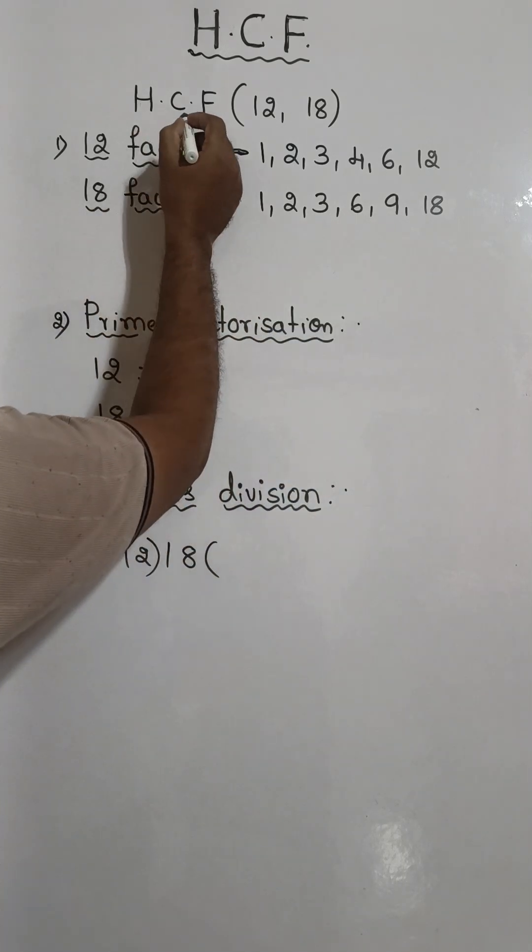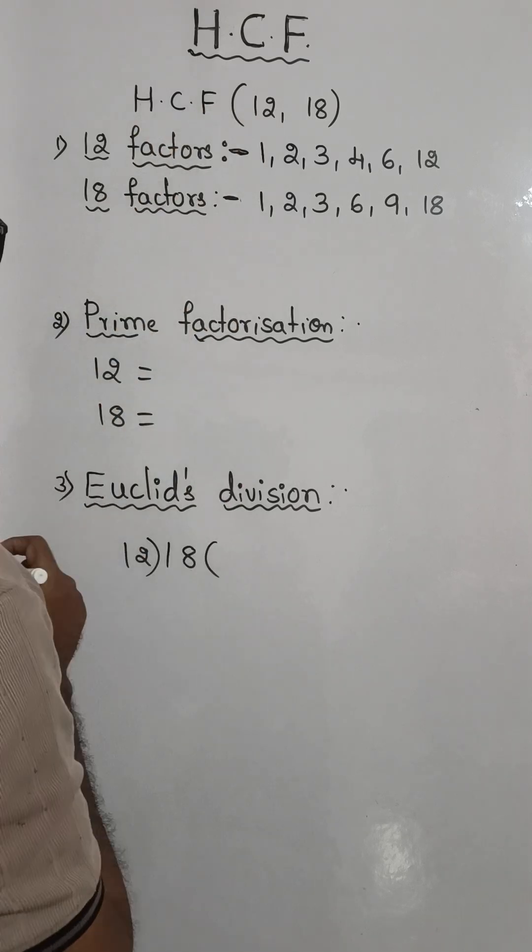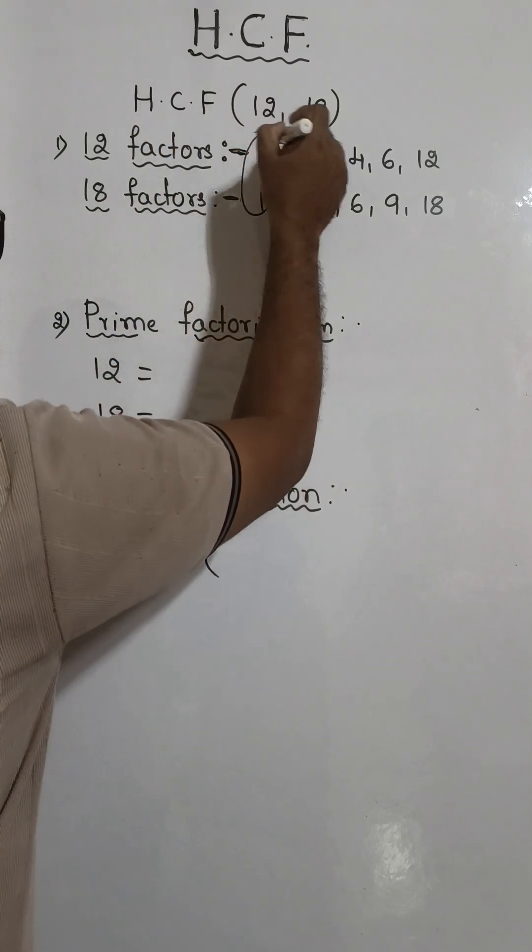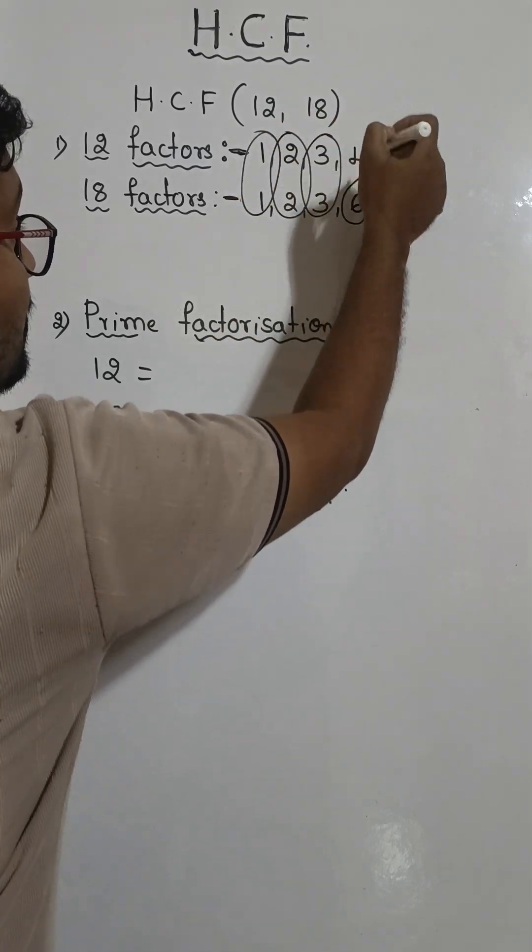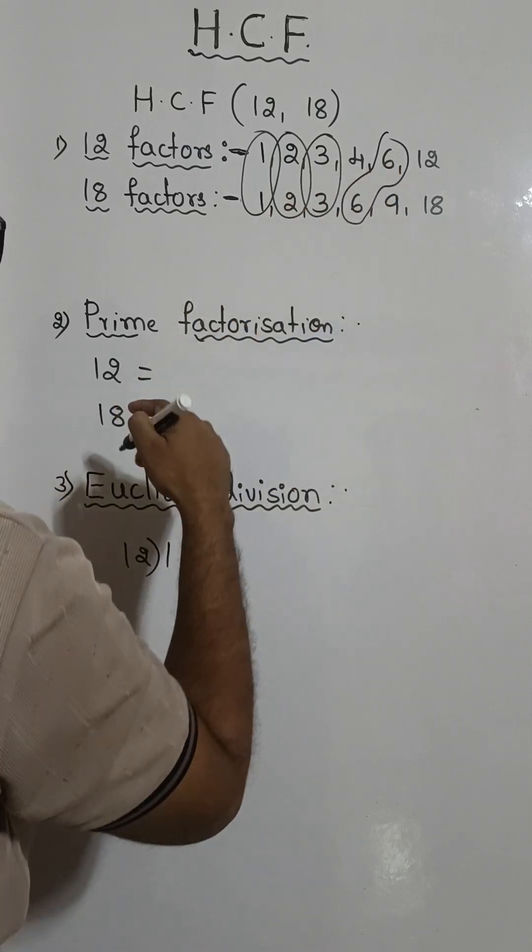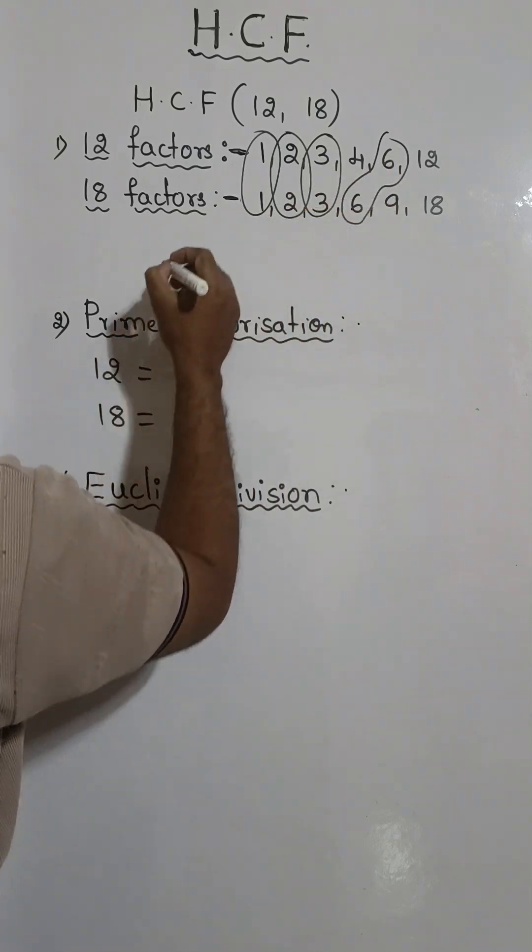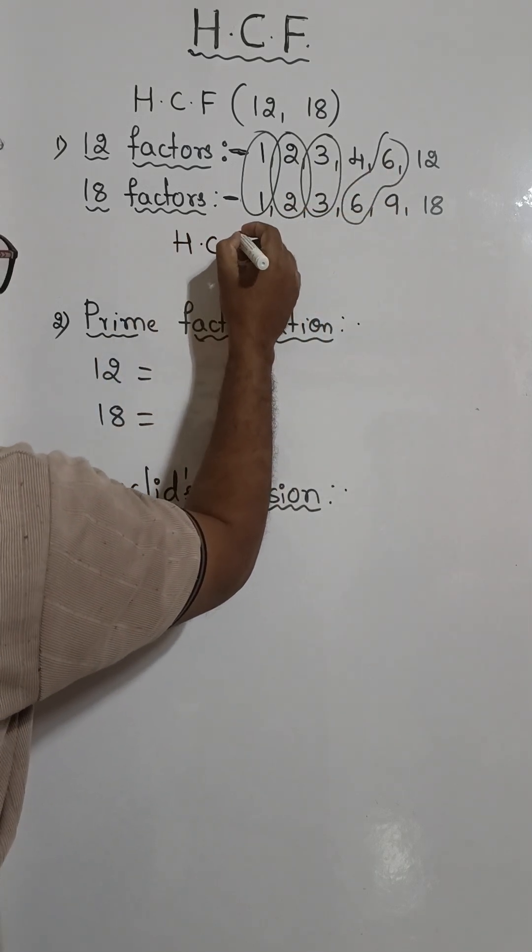The meaning of HCF is highest common factor. The common factors here are 1, 2, 3, and 6. The highest common factor in all these is equal to 6. So HCF is equal to 6.